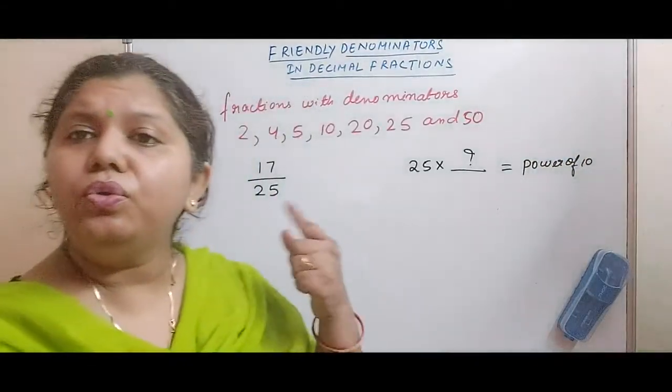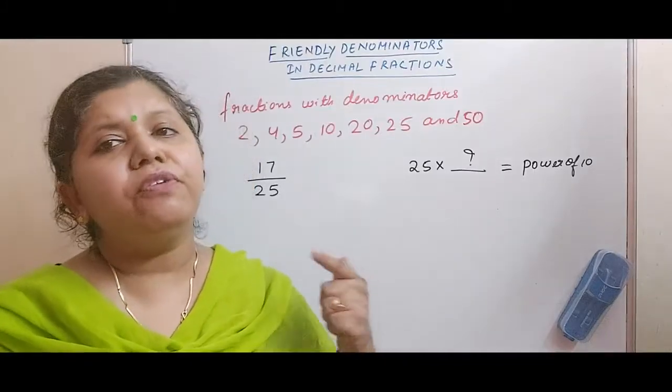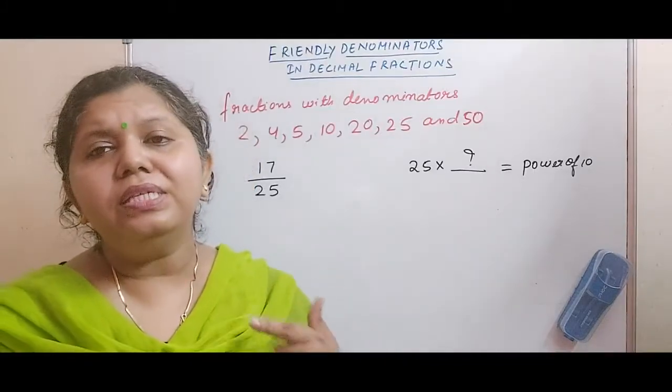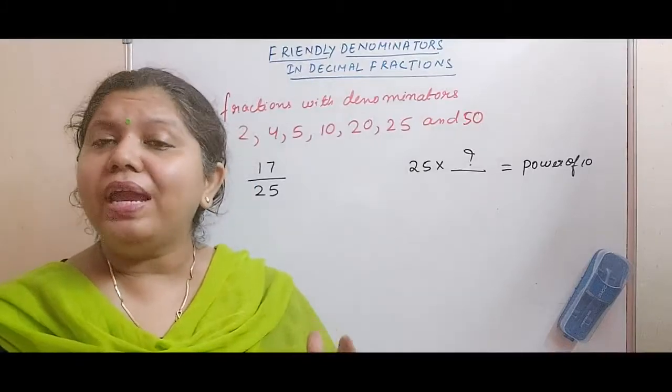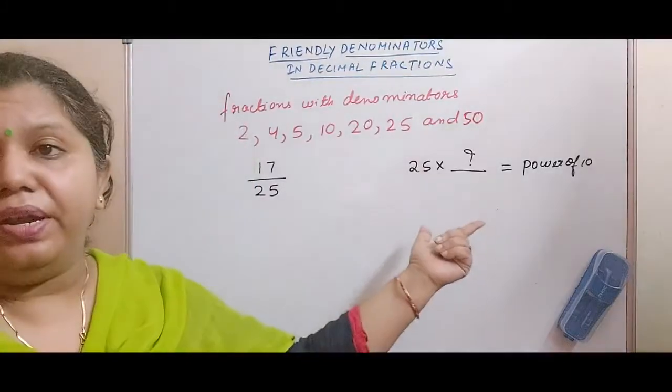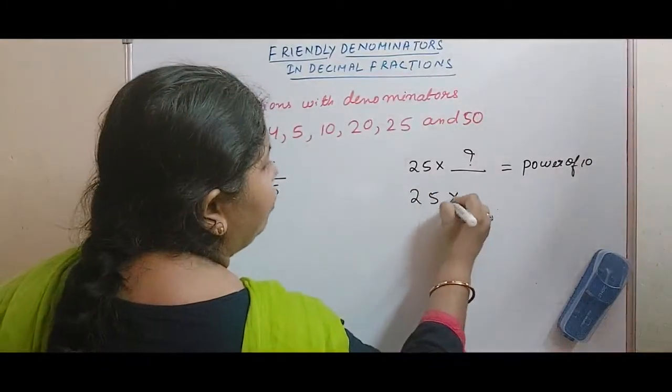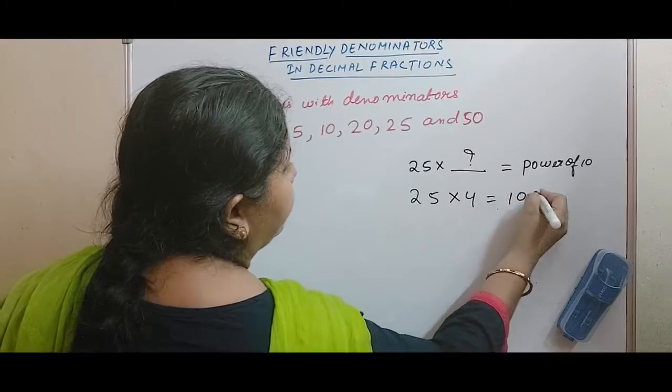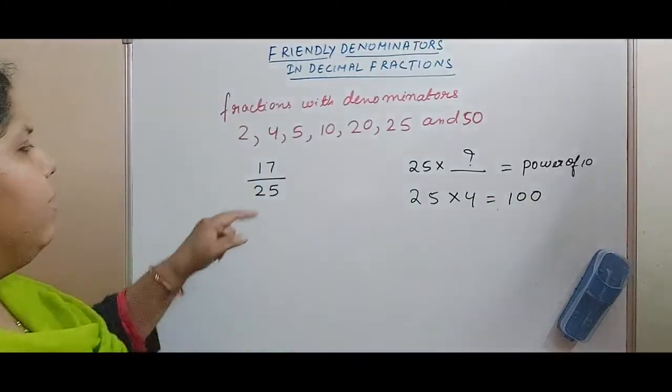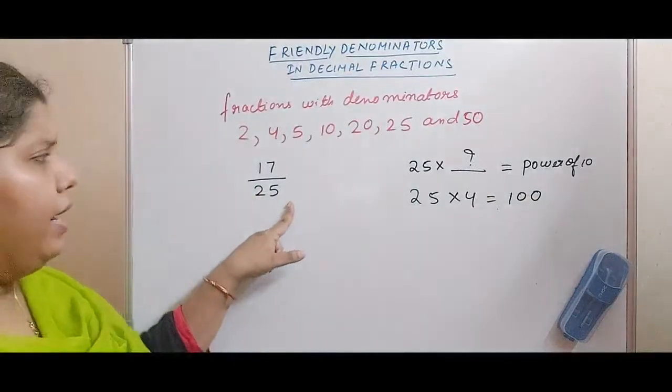25 into what will give me power of 10? So go to the table of 25. 25 times 1 is 25. 25 times 2 is 50. 25 times 3 is 75. 25 times 4 is 100. Now 100 is a power of 10, right? So we can say that 25 into 4 equals 100.